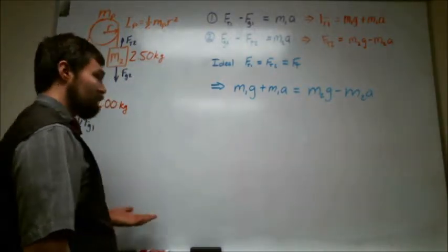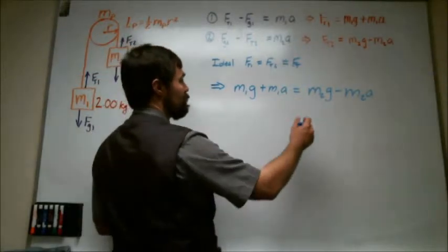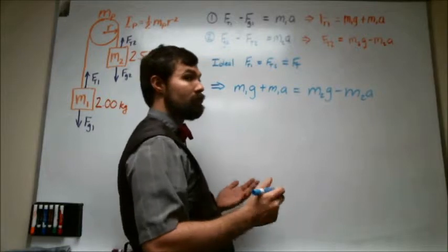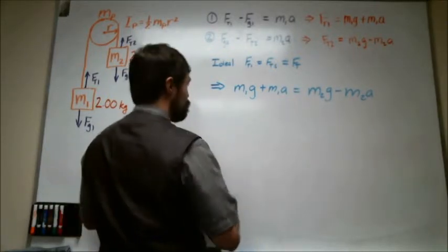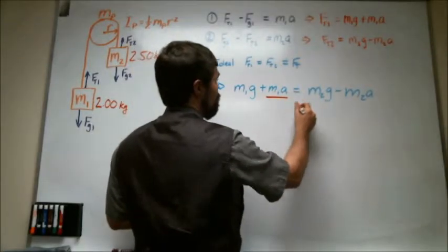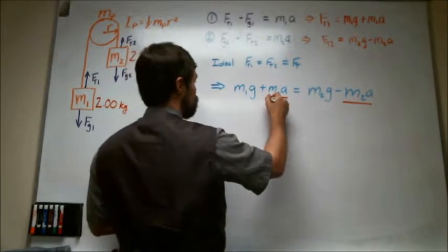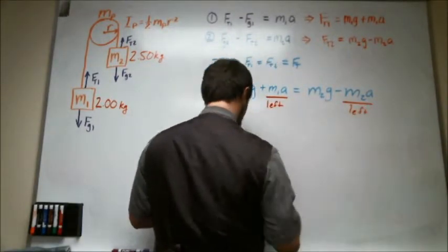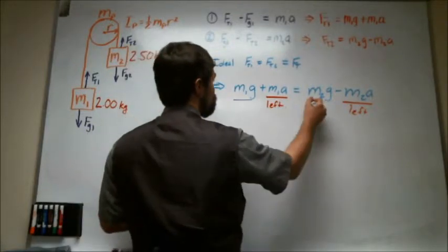And what we want to solve for then is the acceleration. So let's get all the acceleration terms on one side and all of the non-acceleration terms, or the terms that are not multiplying a, on the other side. So on the left hand side we want these two terms, so move these to left, and on the right hand side we want these two terms.